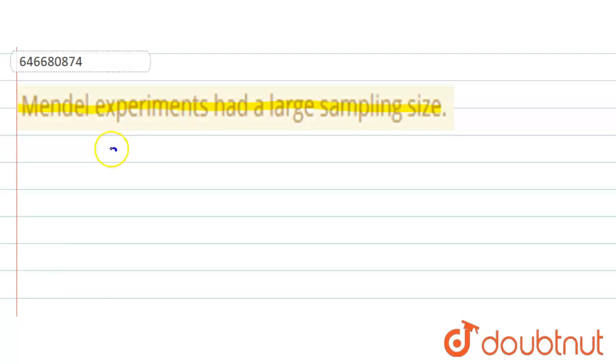So what is this sample size? It is represented as n and it is the number of individual pieces of data used to calculate a set of statistics. So what is this larger sampling size?